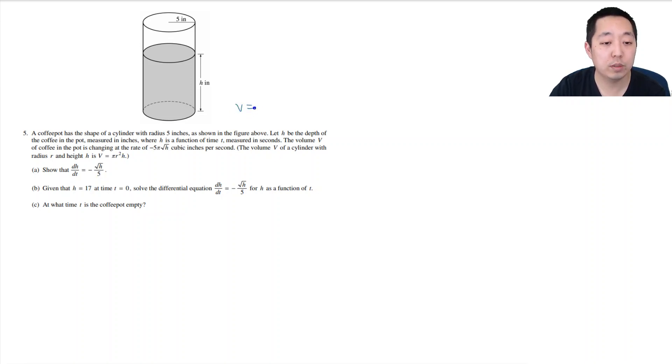So we have V = πr²h and they tell us that r is 5, h is a variable, h is a function of t, and dV/dt is equal to -5π√h. They want us to find dh/dt. So we just take the derivative of this equation. I'm going to write πr²h, dV/dt. Just take the derivative of both sides. πr² - because r is a constant, πr² is the same, so it's just dh/dt.